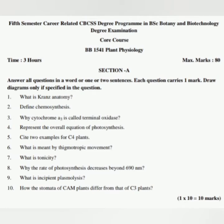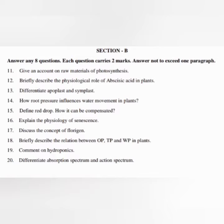Section B: Answer any eight questions. Each question carries two marks. Answer not to exceed one paragraph. Question 11: Give an account on raw materials of photosynthesis. Question 12: Briefly describe the physiological role of abscisic acid in plants.